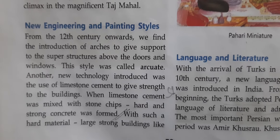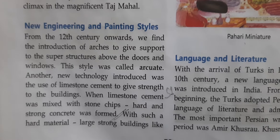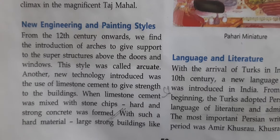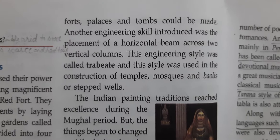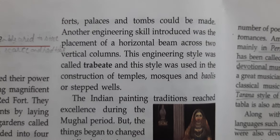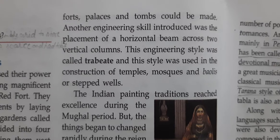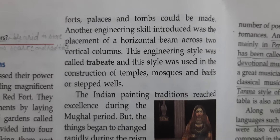When stone chips were mixed with limestone and cement, very hard and strong concrete was formed, enabling the construction of large strong buildings like forts, palaces, and tombs. Another engineering skill introduced was the placement of horizontal beams across two vertical columns, called the trabeate style, used in temples, mosques, and stepwells.